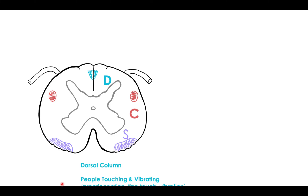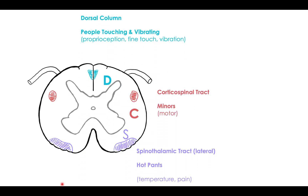First I want to go real quick over the DCS mnemonic I came up with for the cross-section of the spinal cord. If you haven't watched that video, I definitely recommend you watch that before this one. I use the same functions — obviously the dorsal column, corticospinal tract, and spinothalamic tract don't change — it's just the location of them that will change in the medulla. So DCS works for the function, but not for where they are located.